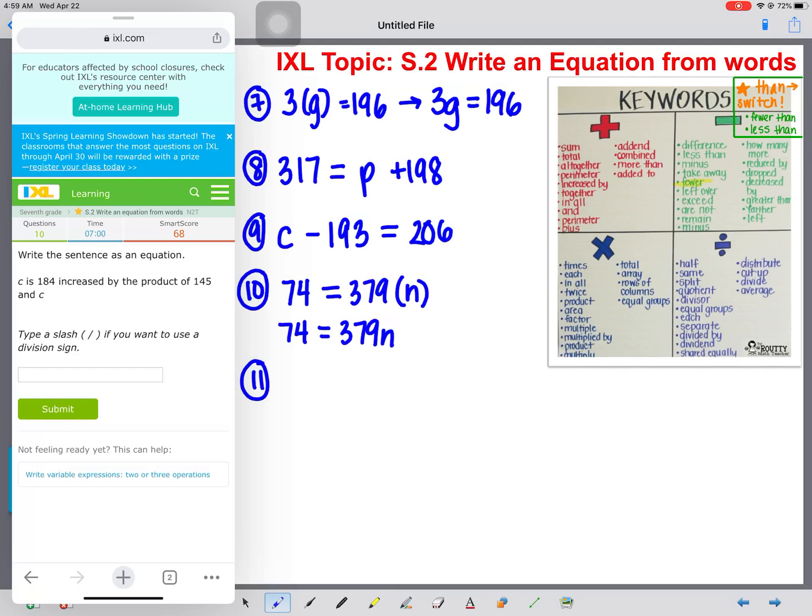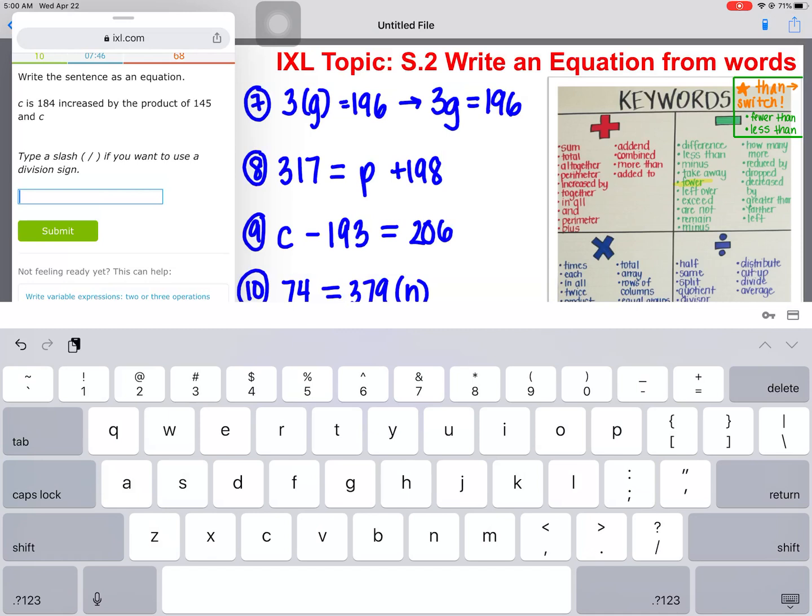C is 184 increased by the product of 145 and C. Alright, let's translate. So it says C is, so C equals 184 increased by, so 184 increased by is addition, the product of 145 and C. So we're multiplying 145 times C. So our final answer is going to be C equals 184 plus 145C, like that. Let's just make it a little neater. Okay, C equals 184 plus 145C.